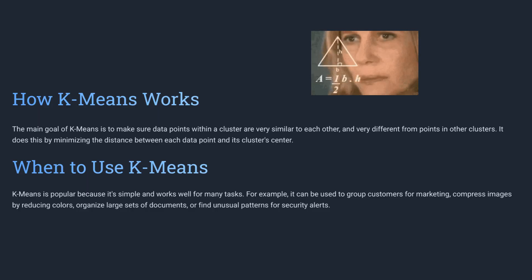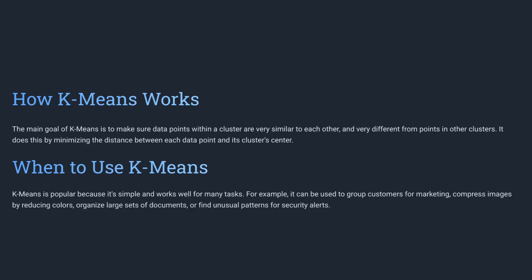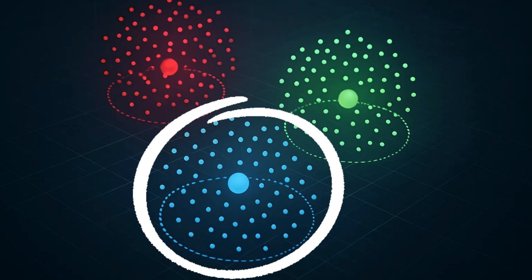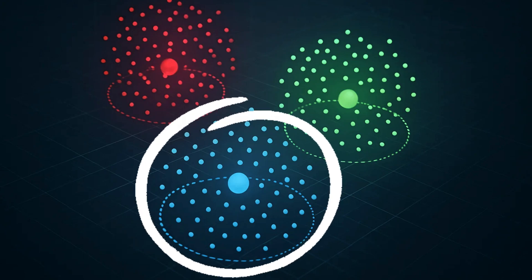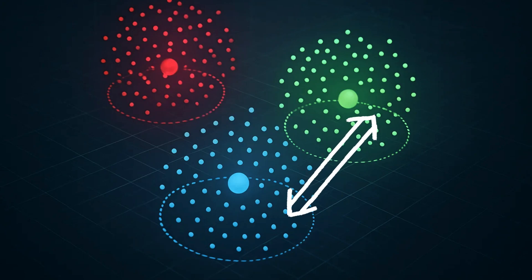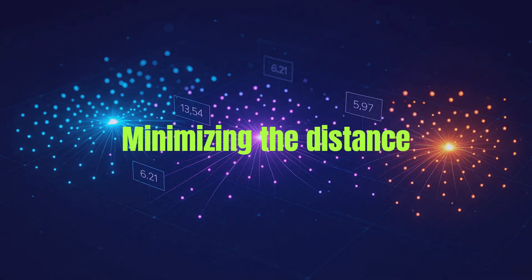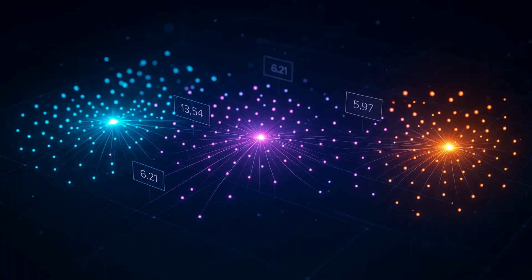Let's talk about how k-means works. The main goal of k-means is to ensure that data points within a cluster are very similar to each other, while being very different from points in other clusters. It achieves this by minimizing the distance between each data point and its cluster center.